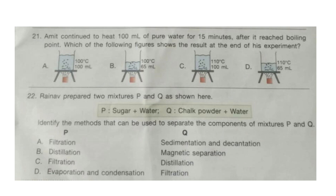Question 22. Reinov prepared two mixtures P and Q. P is sugar plus water, and Q is chalk powder plus water. Identify the methods that can be used to separate the components of mixture P and Q. Look at the options and try to find out the answer. The correct answer is option D. P will be separated by evaporation and condensation, and Q is separated by filtration, by which chalk powder can be separated from water.